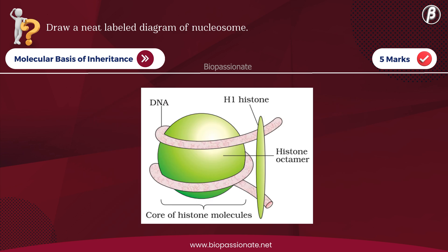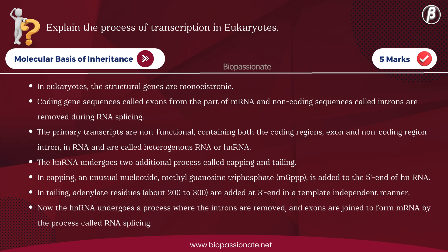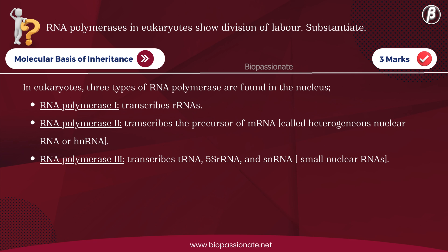Draw a neat labeled diagram of a nucleosome — for two marks. Explain the process of transcription in eukaryotes — for five marks. RNA polymerases in eukaryotes show division of labor — substantiate — for three marks.